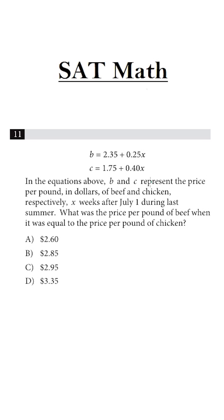In the equations above, B and C represent the prices per pound in dollars of beef and chicken, B for beef and C for chicken, respectively. X weeks after July 1 during last summer, what was the price per pound of beef when it was equal to the price per pound of chicken?